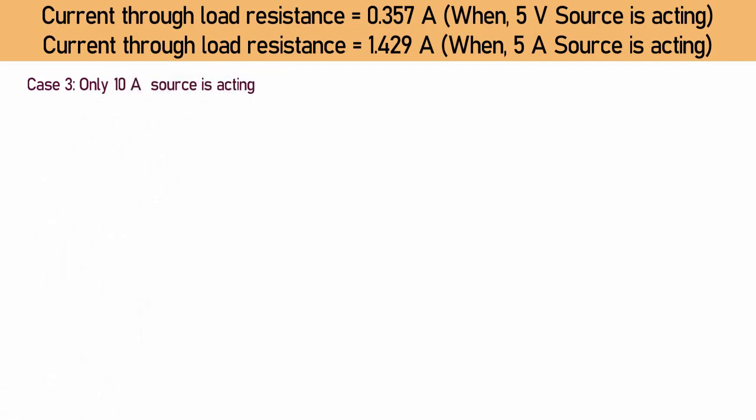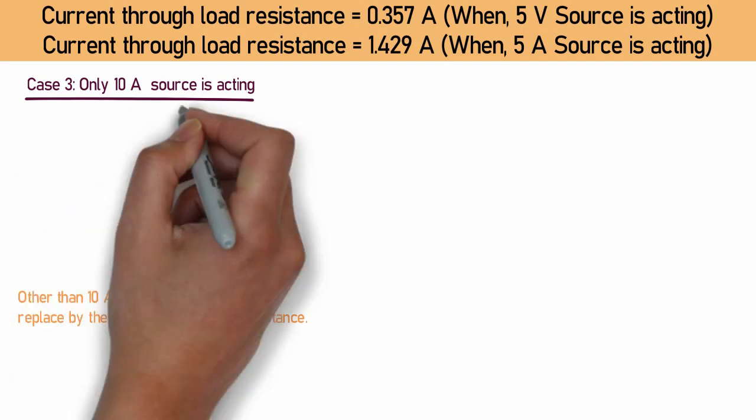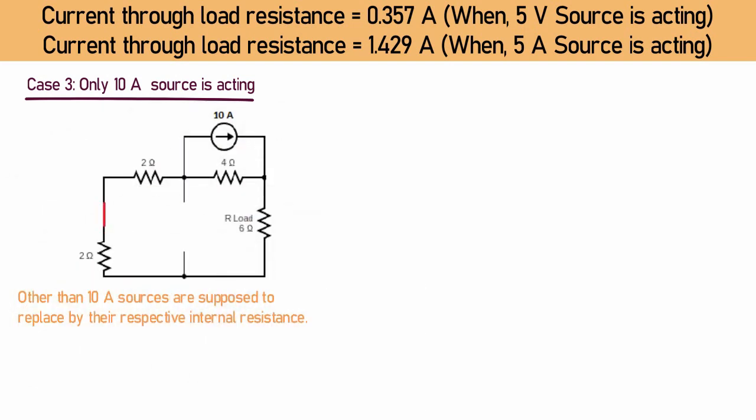In the last case, only 10A current source is on. And rest of all are represented with their internal resistance. Here, it can be seen that 5V voltage source is sorted and 5A current source is kept open.